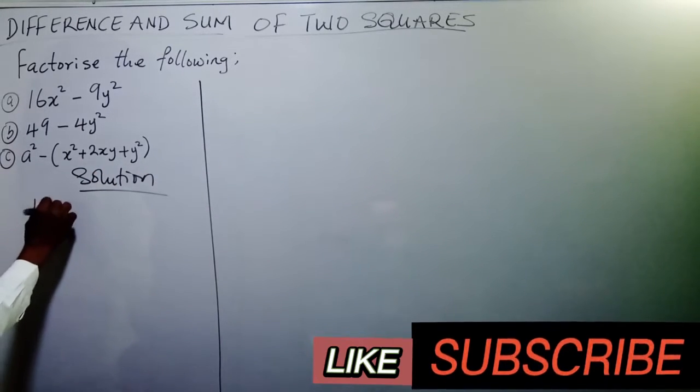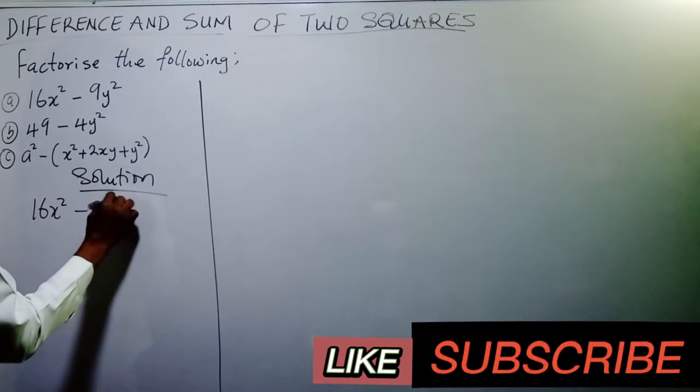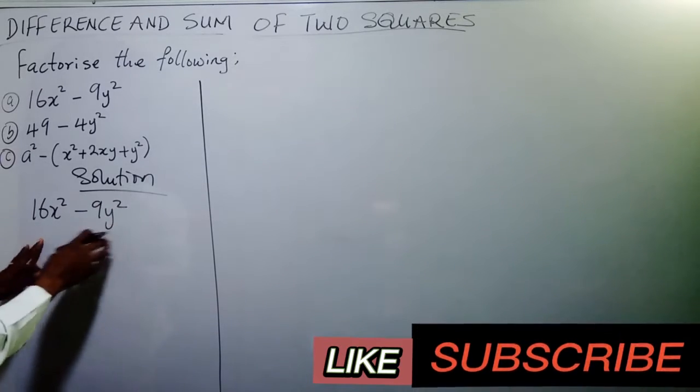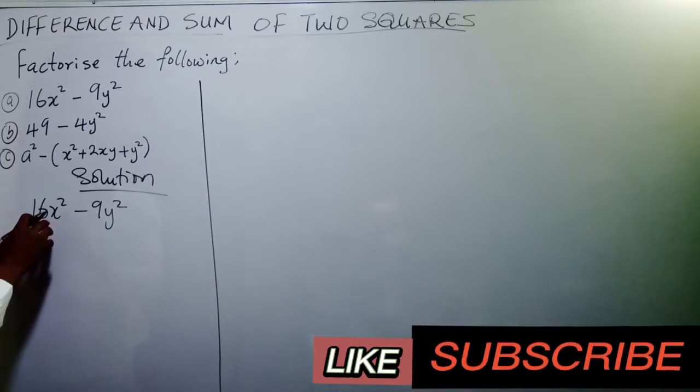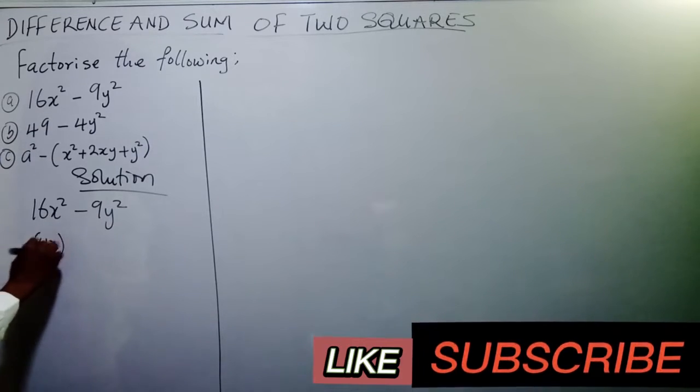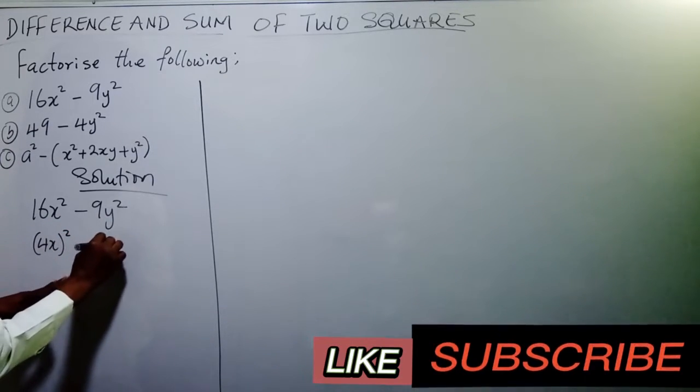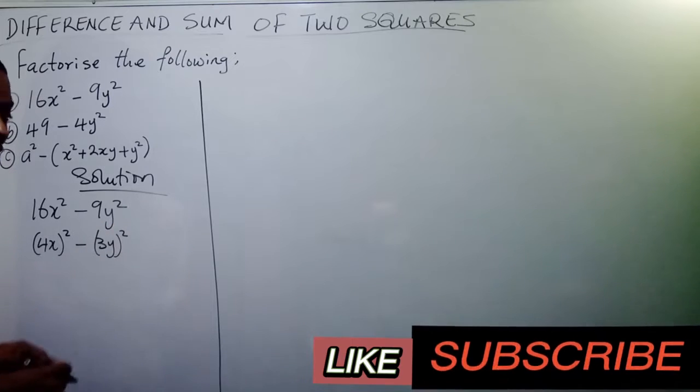Solution: 16a square minus 9y square. If you look at this, something is common here. This is saying 4x square minus 3y square. That is it.